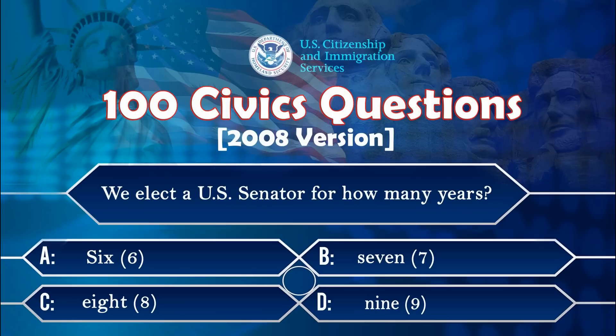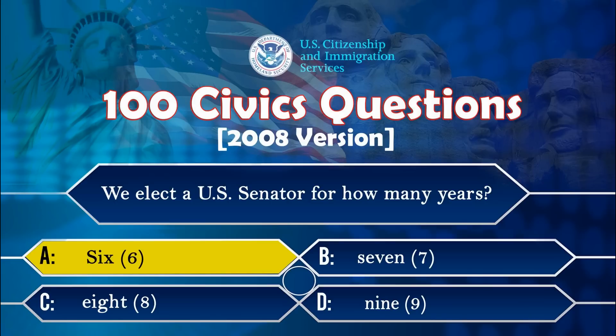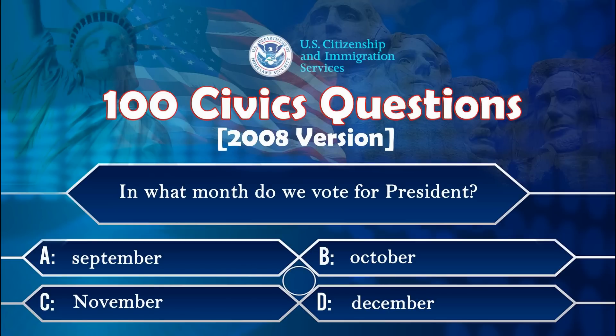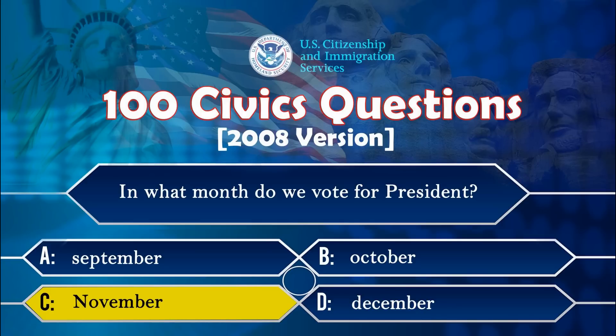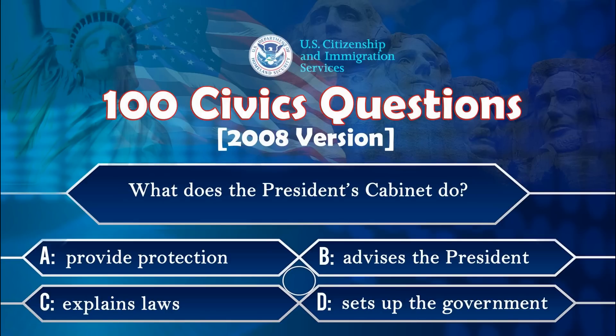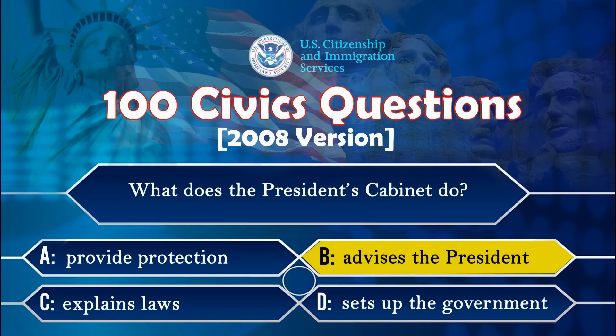We elect a US senator for how many years? Six. In what month do we vote for president? November. What does the president's cabinet do? Advises the president.